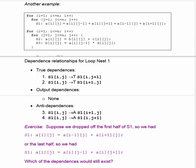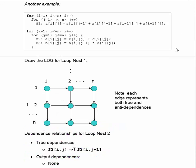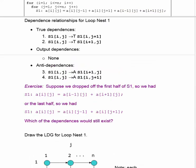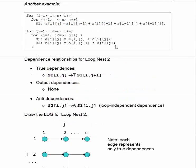One interesting thing to note is that the true dependences have exactly the same form as the corresponding anti-dependences. That means when we look at the loop dependence graph, each edge represents both true and anti-dependences — the iteration point to the right is dependent in both senses on the point to the left, as is the point below. This raises an interesting question: suppose we dropped the first half of statement S1, giving A sub i,j equals A sub i-minus-1,j plus A sub i+1,j. Which of the dependences would still exist?